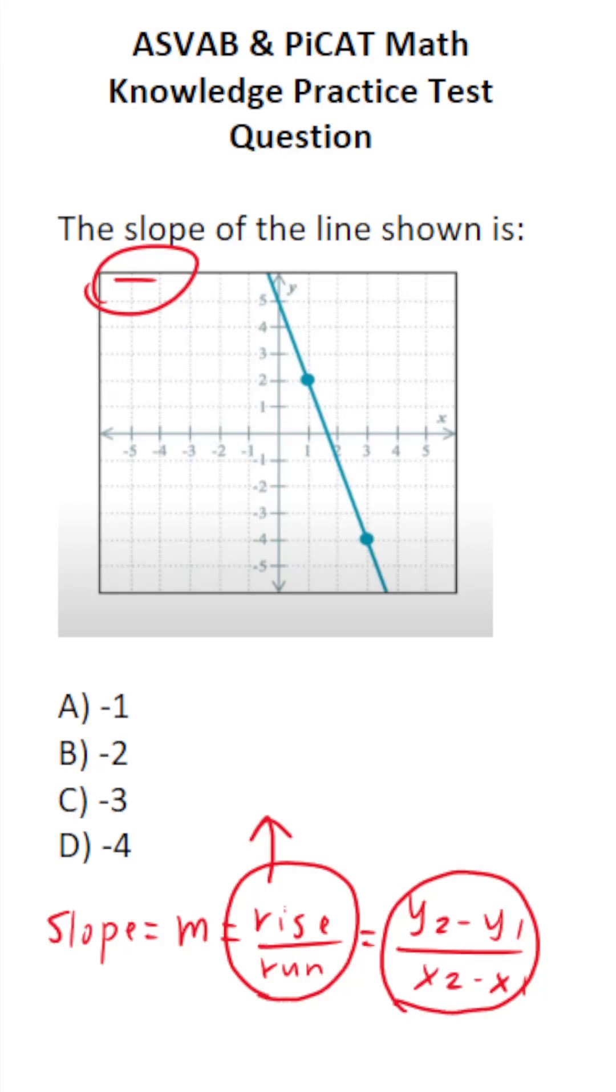But again, rise over run refers to the vertical movement it takes to get from point to point, as well as the horizontal movement it takes to get from point to point. So let's start with rise. That's vertical movement.